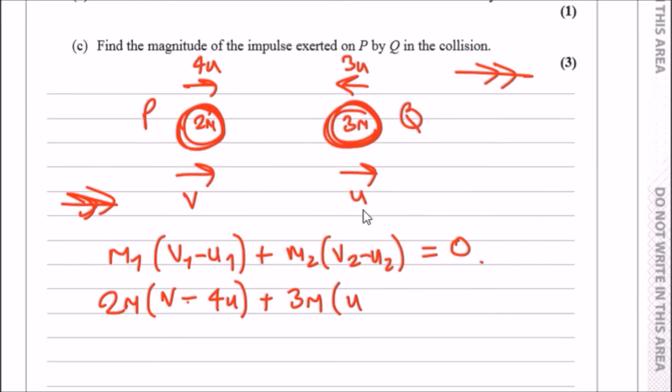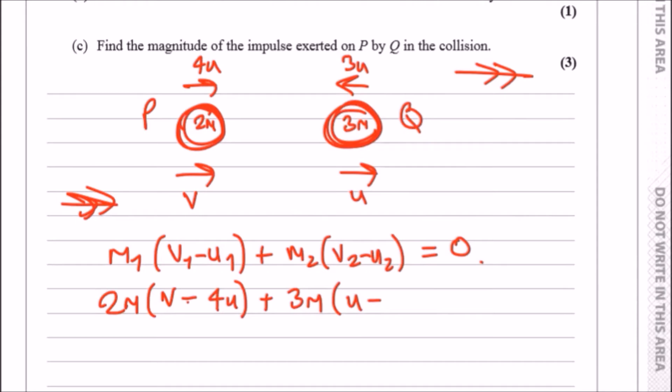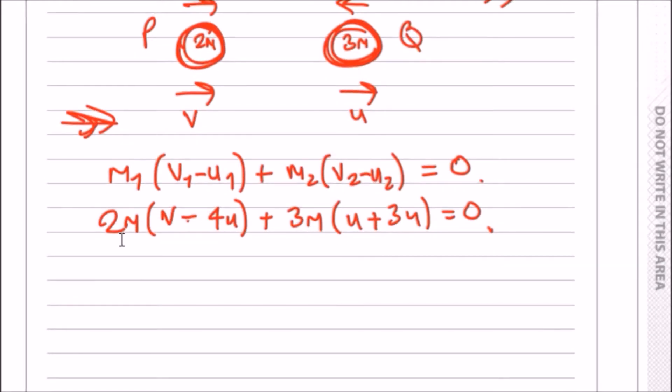We can say that the final speed was u minus the initial speed, which in this case, because it's the opposite direction, would be minus 3u, so it'd be plus 3u. Okay, not bad.